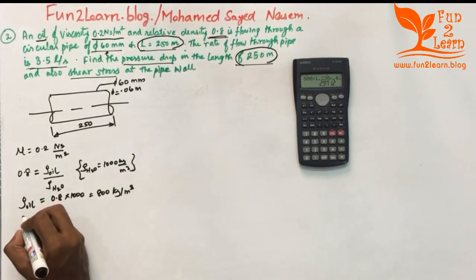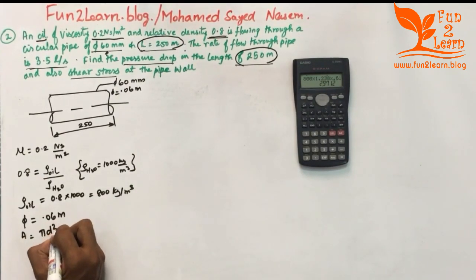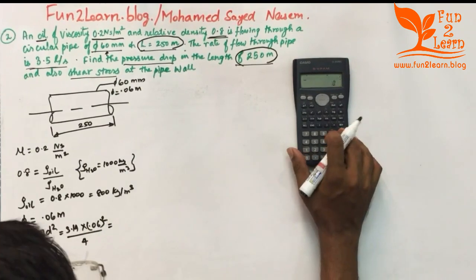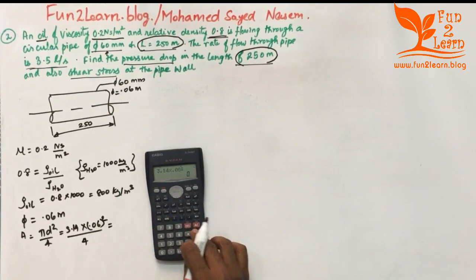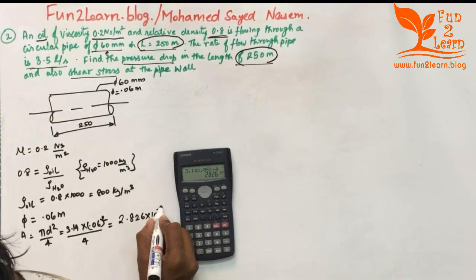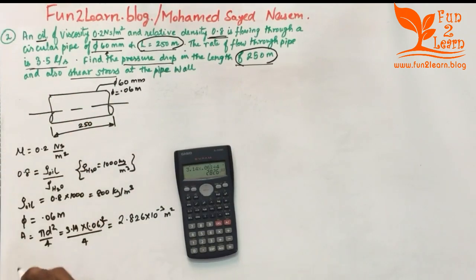The diameter is 0.06 meters. The cross-sectional area is A = πd²/4 = 3.14 × (0.06)² / 4, which gives an area of 2.826 × 10⁻³ meter square.